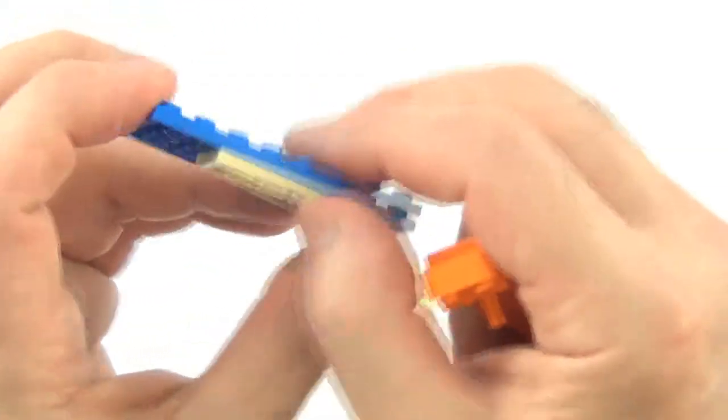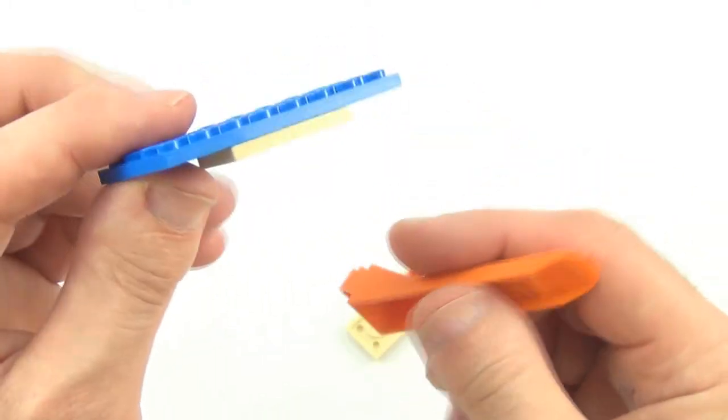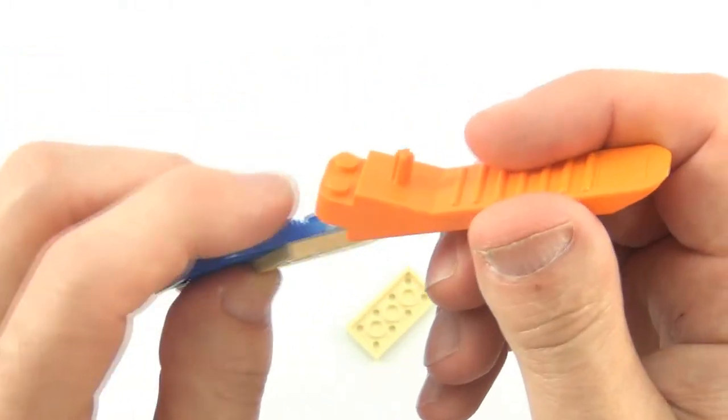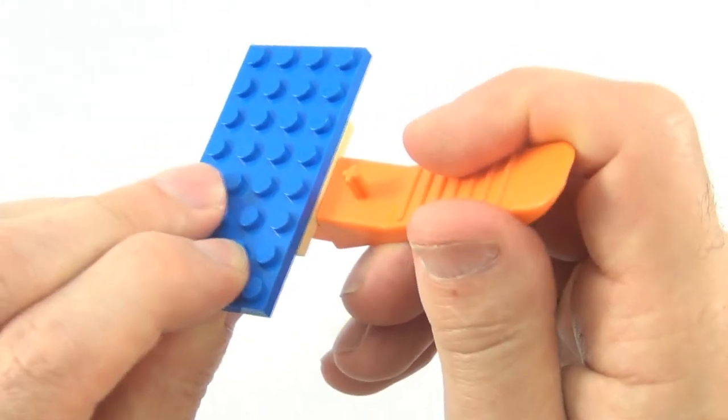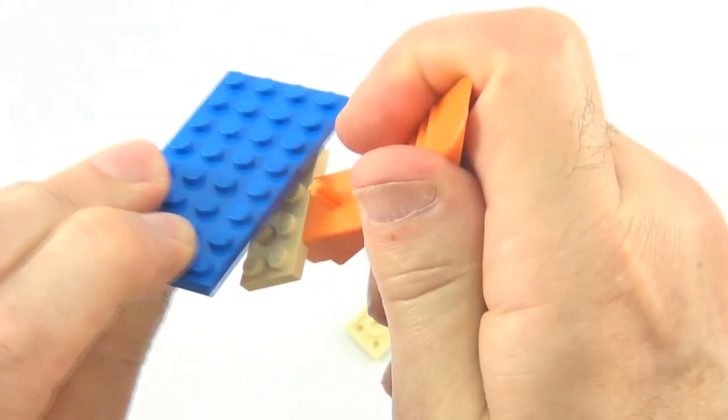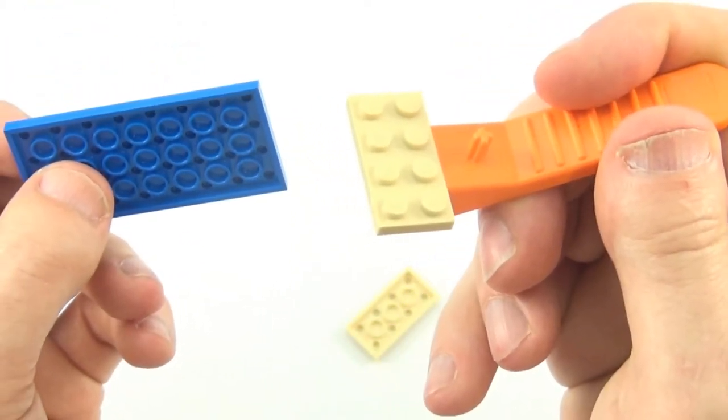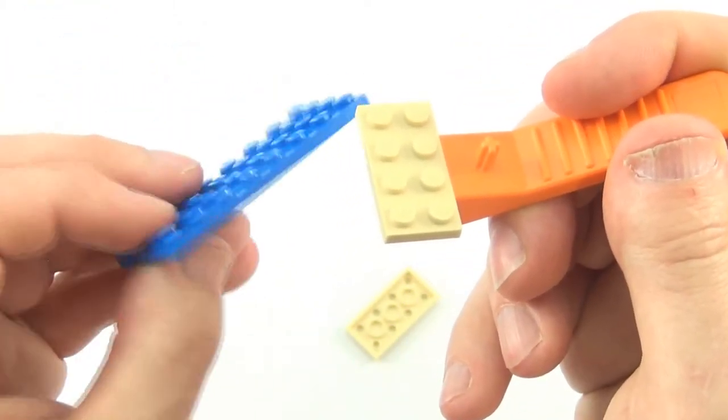And the opposite way, if you have a plate on the underside of a larger plate, use the opposite top side of your brick separator and pull it in an upwards motion. That's fairly easy to remove your smaller plates from larger plates.